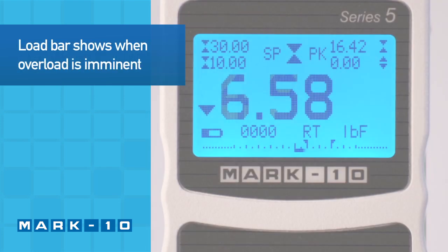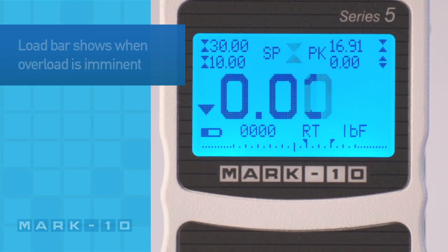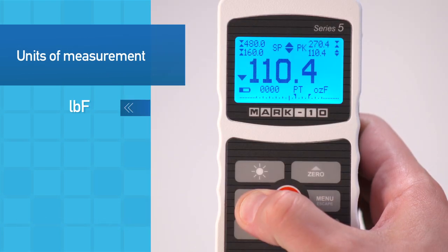For visual convenience, the load bar at the bottom of the display shows when an overload is imminent. Five selectable units of measurement may be used.